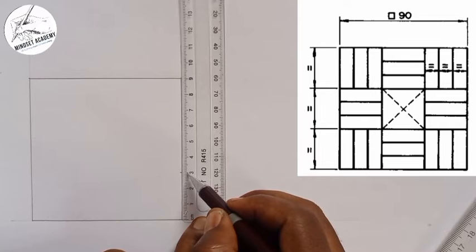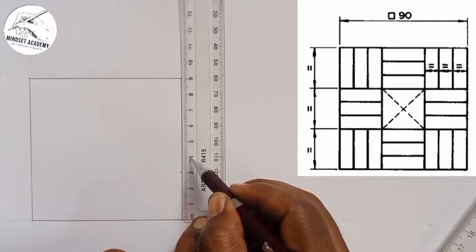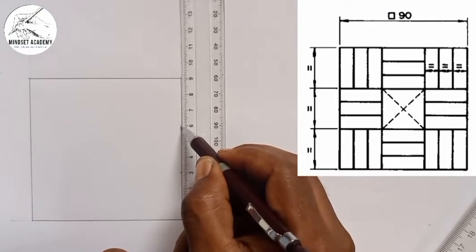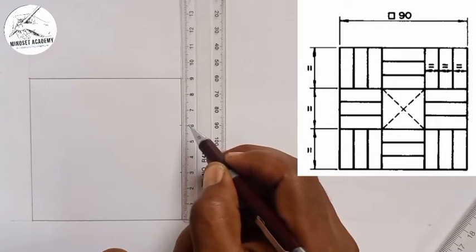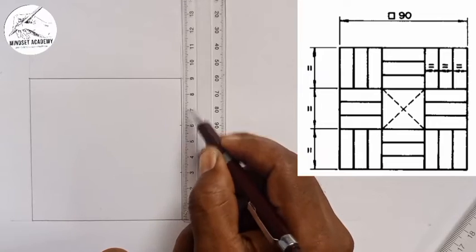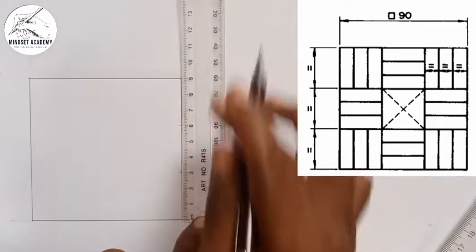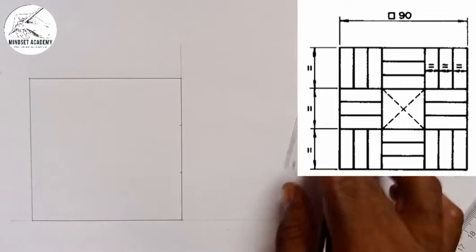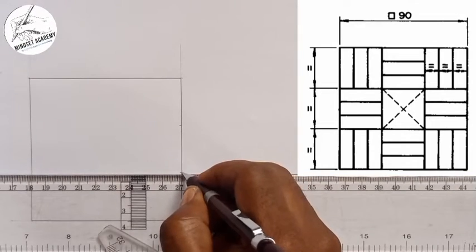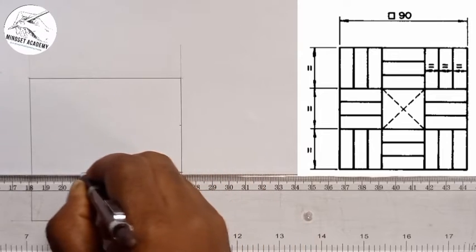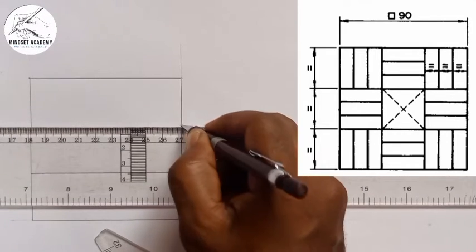Starting from zero: zero to one is 10, to two is 20, to three is 30. From three which is now zero: another 10, 20, 30. From six which is now zero: 10, 20, 30. That gives the three 30mm divisions from zero to ninety. I'll take my T-square, move it to each point, and draw a thick line.